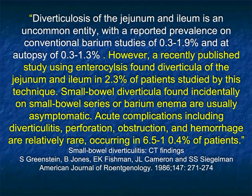Going back to our article: diverticulosis of jejunum and ileum is an uncommon entity, around 1% or less. But when you look at some of the pathology diagnoses and look for diverticulitis, it's a bit more common. When you talk about small bowel diverticulitis, acute complications include diverticulitis, perforation, obstruction, and hemorrhage. Again, this is pretty rare, but if you can make the diagnosis, it's great.